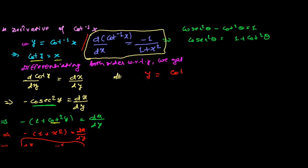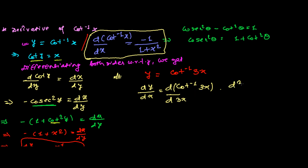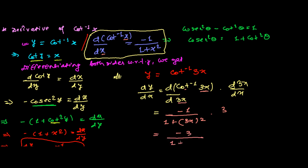For example, suppose we have cot inverse(3x). To find the derivative with respect to x, we apply the formula: the derivative of cot inverse of an angle with respect to that angle is −1/(1 + angle²), then multiply by the derivative of the angle. Here the angle is 3x, so we get −1/(1 + (3x)²) times 3, which gives −3/(1 + 9x²). That is the derivative of cot inverse(3x).